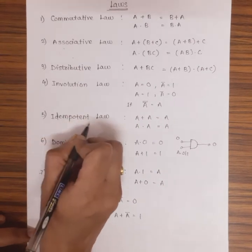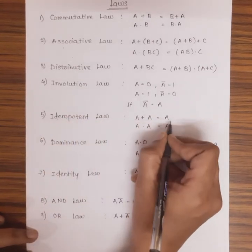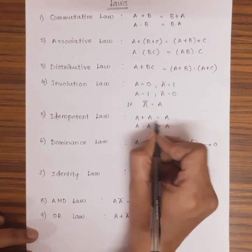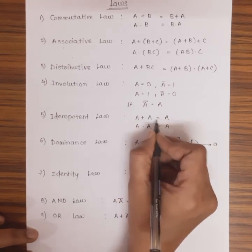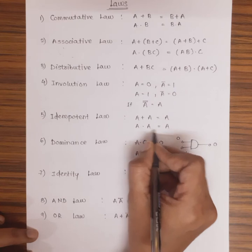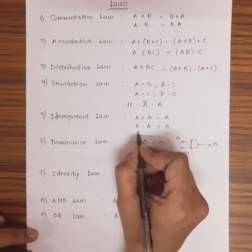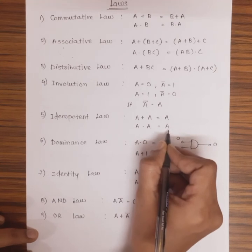Coming to the idempotent law: A + A = A. 0 + 0 produces 0, 1 + 1 produces 1. Also, A · A = A. 0 · 0 result is 0, 1 · 1 result is 1.